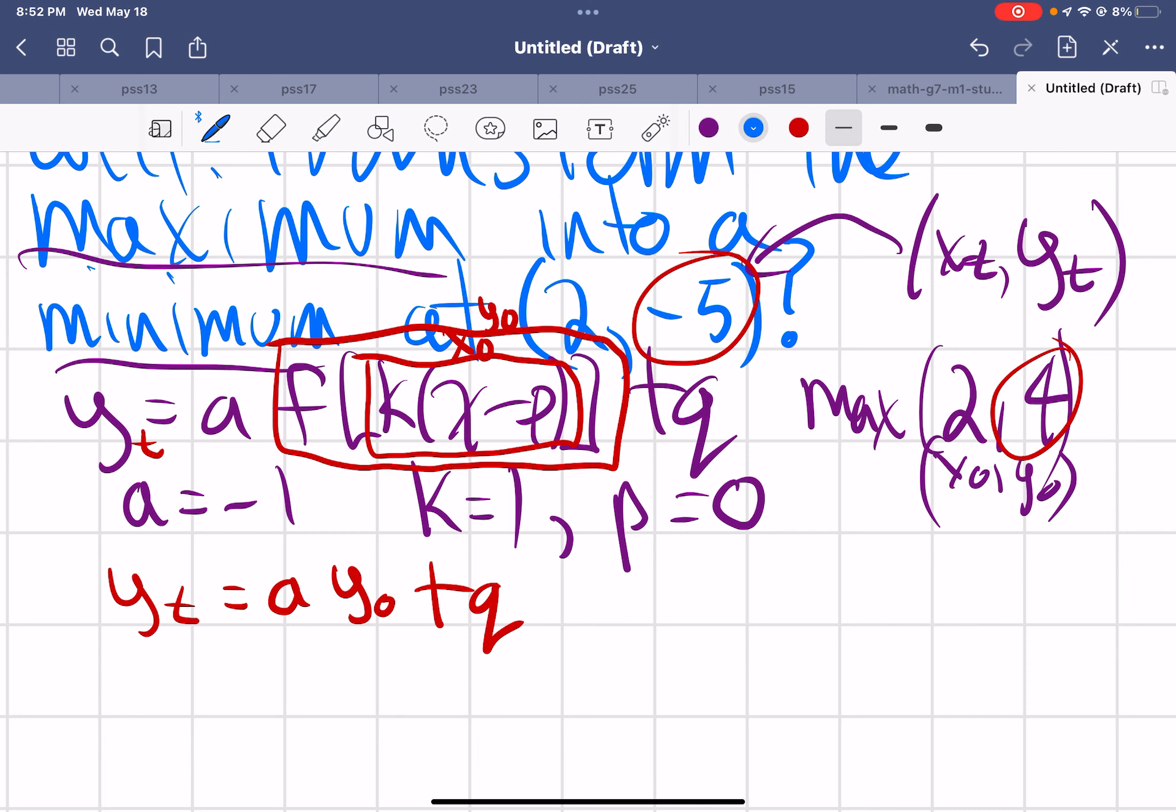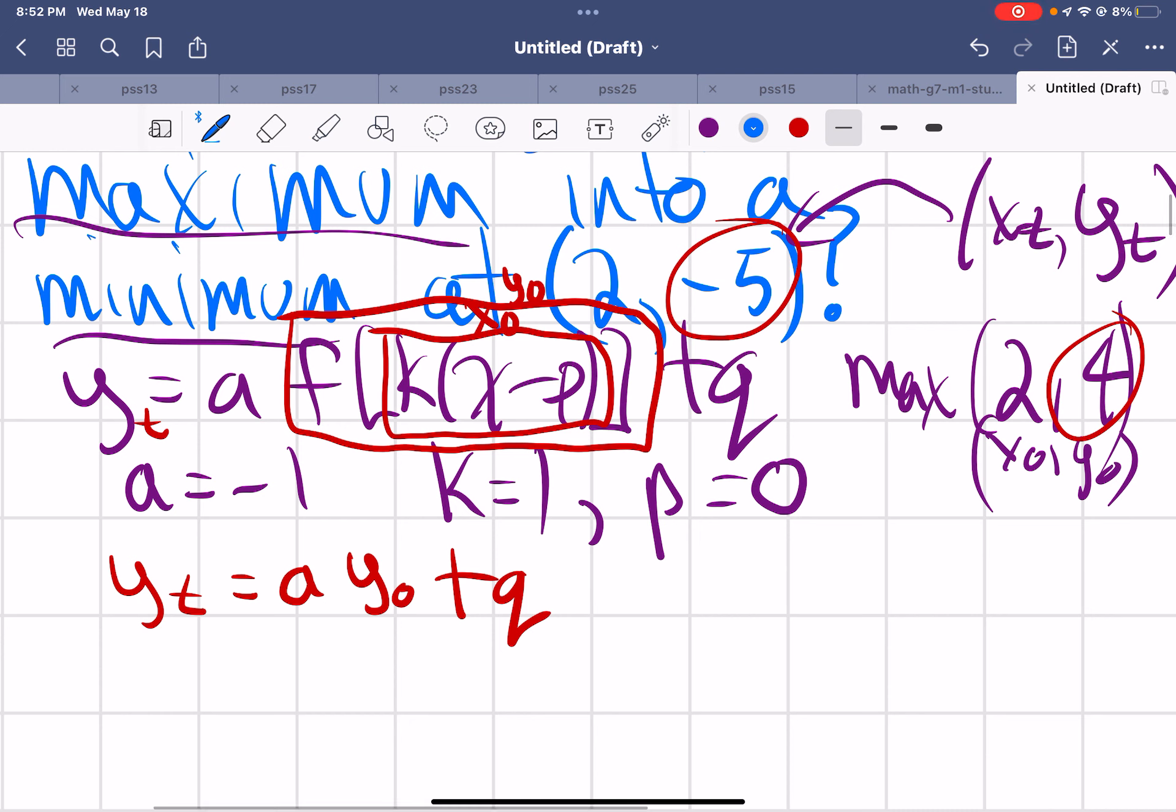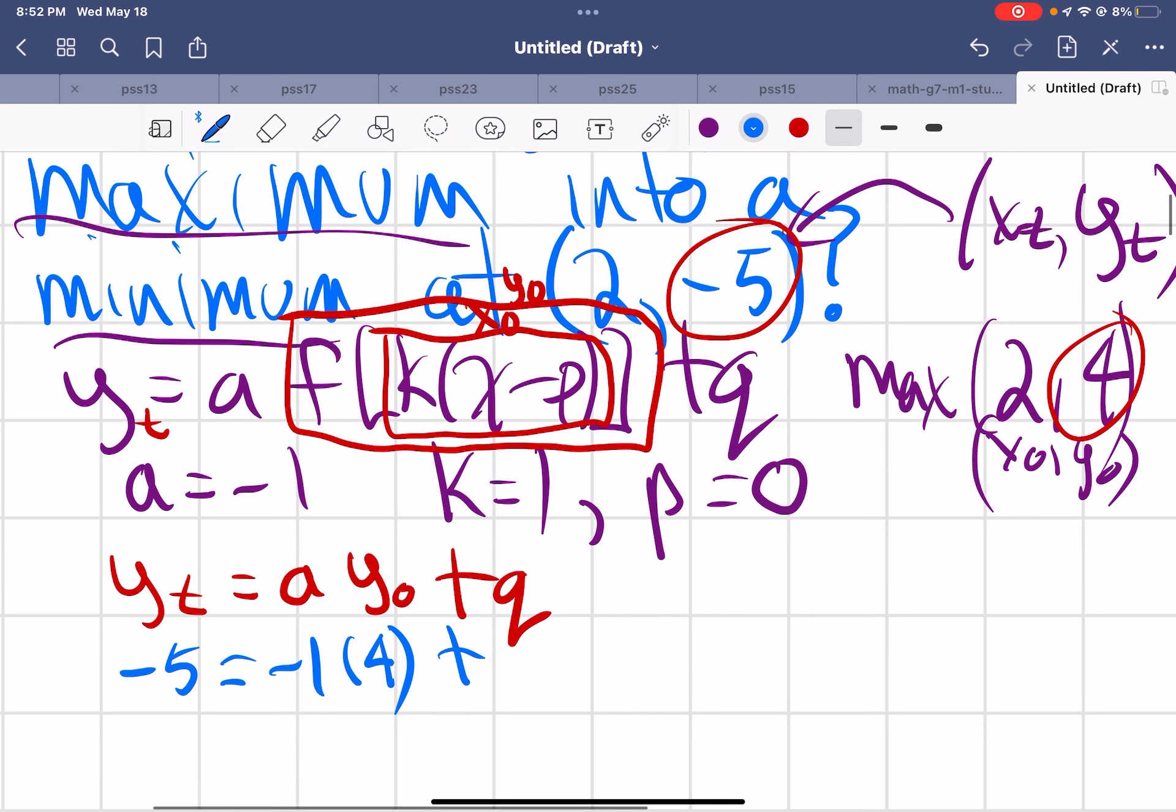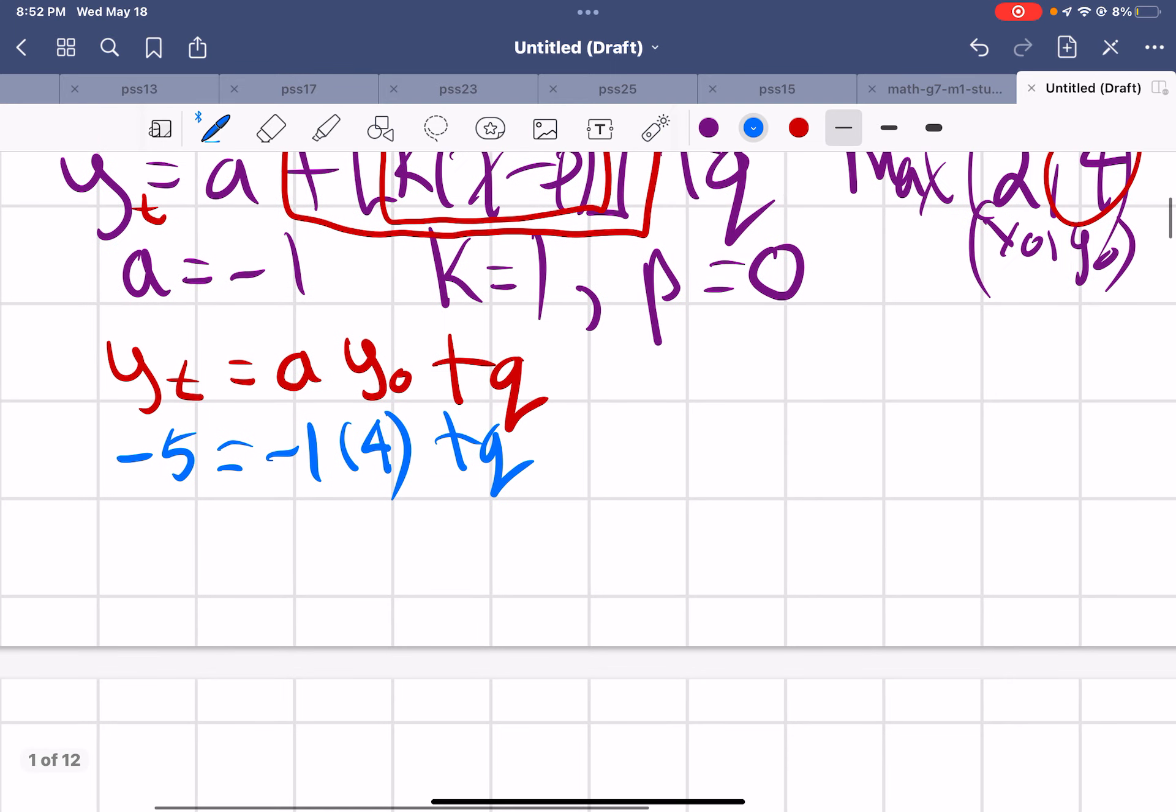Here we go. So Y transformed, I know is negative 5. A, I'm suggesting I can make negative 1. The Y original value is 4 plus Q. Now, I just solve for Q. Q is going to equal negative 5 plus 4.